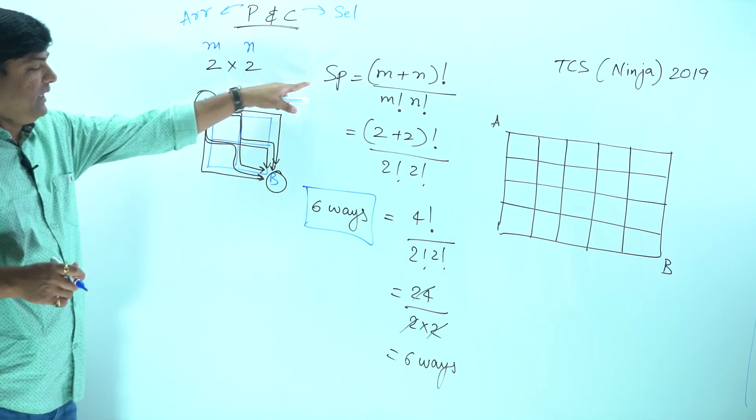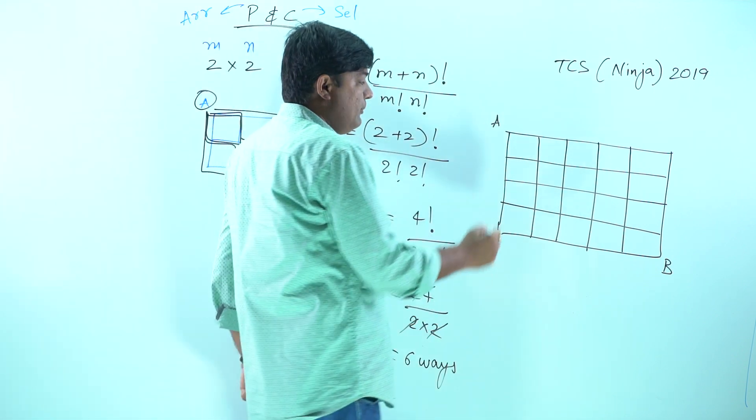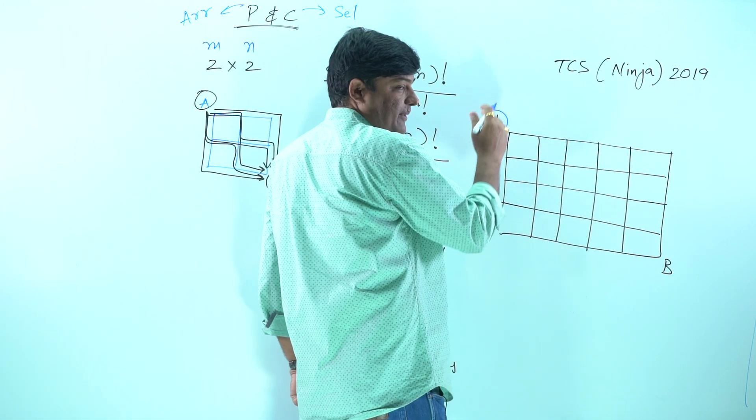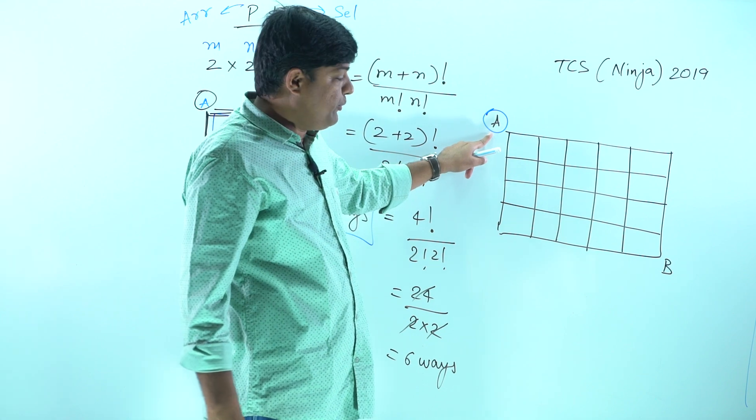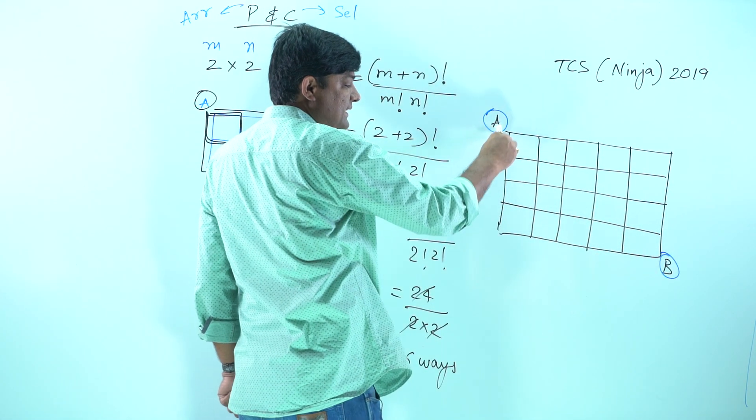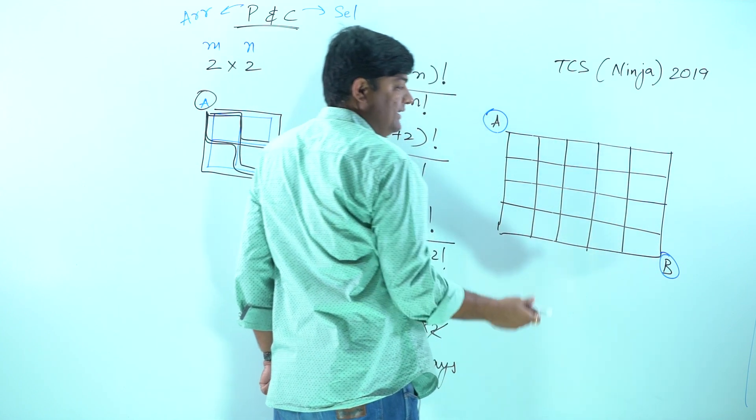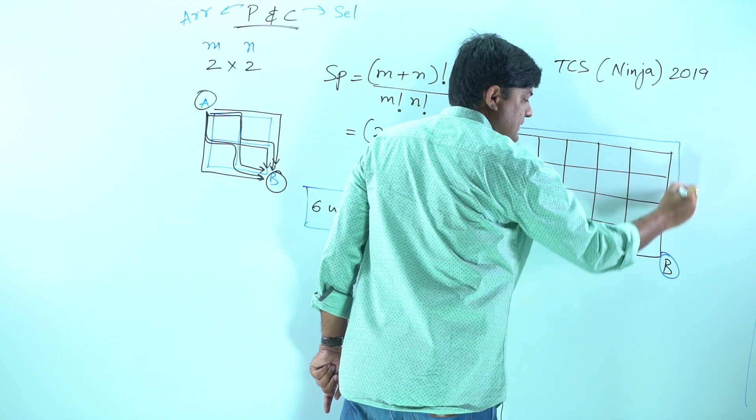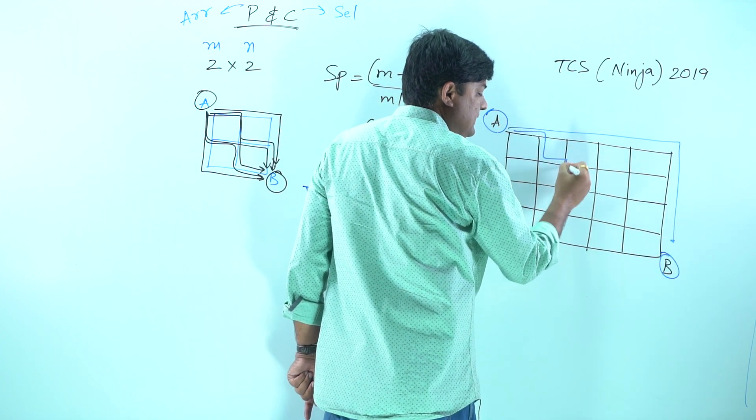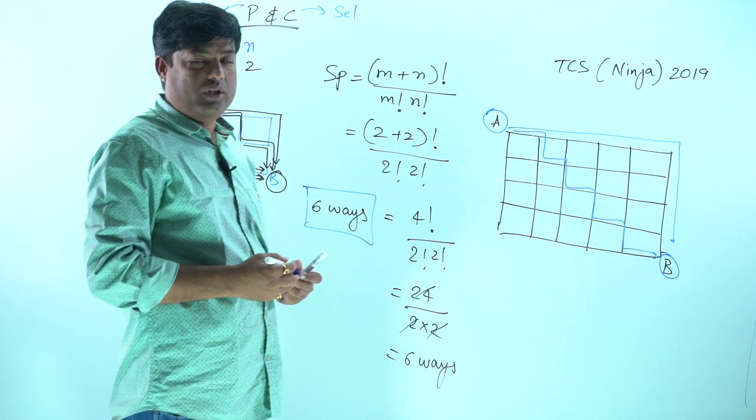Now same concept is applied over here. If a person wants to travel from point A to point B in a shortest path, we can't say that this is the shortest path, this is the longest. The shortest path comes like this or like this in many ways.